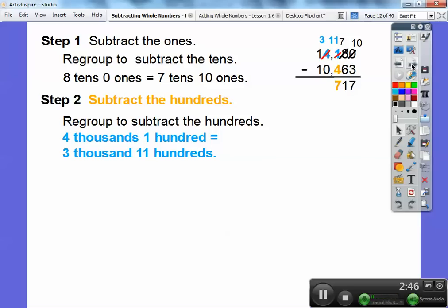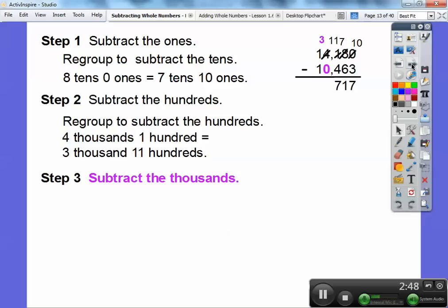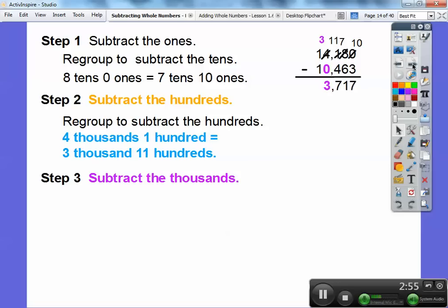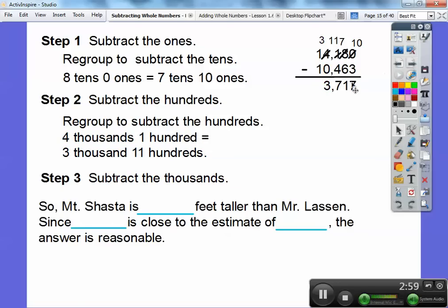So this becomes 3,000 and this becomes 1,100. Now I can subtract 1,100 minus 400. 11 minus 4 is 7. Now I'm going to subtract the thousands. This is now 3,000. 3,000 minus 0 is just 3,000.